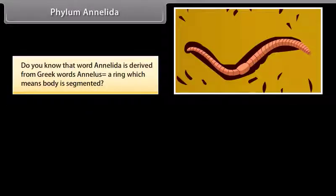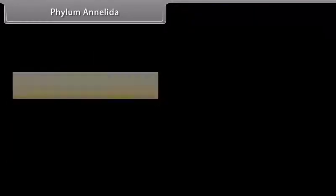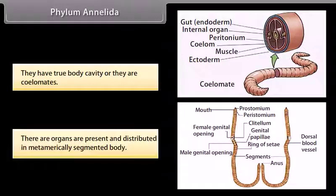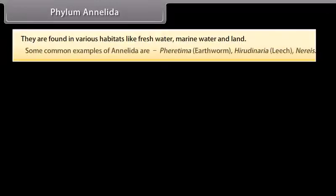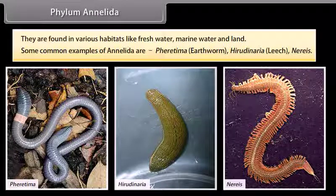Phylum Annelida. The word annelida is derived from Greek word analis, ring, which means the body is segmented. The animals of phylum Annelida are bilaterally symmetrical, multicellular, and triploblastic. They have a true body cavity, or they are coelomates. There are organs present and distributed in a metamerically segmented body. They are found in various habitats like freshwater, marine water, and land. Some common examples of Annelida are Pheretima (earthworm), Hirudinaria (leech), and Nereis.